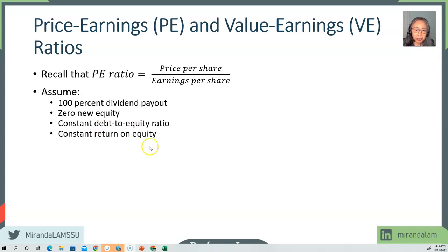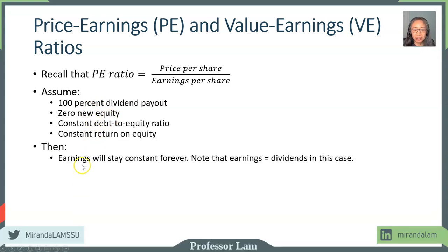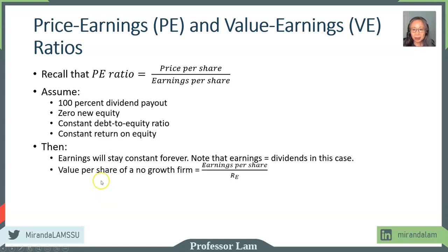We use these simple assumptions to help us see the relationship between the P.E. ratio and the value earnings ratio. If a firm pays everything out, issues no new equity, and everything else is constant, then earnings will stay constant forever because you're paying out all your earnings as dividends. You're not keeping any retained earnings and you have a constant debt to equity ratio, which means you have no new investment in the firm.